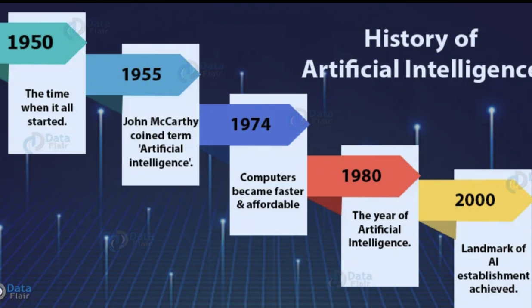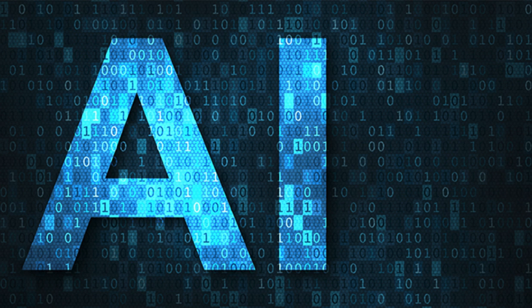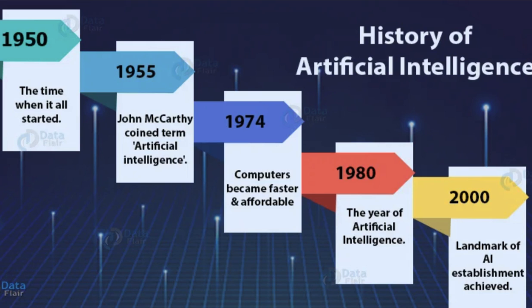Looking at the history of AI, in the mid-1950s John McCarthy, known as the father of artificial intelligence, defined AI as the science and engineering of making intelligent machines. The development of AI is mainly dependent on access to large amounts of data. That's why for many years we didn't see much improvement in AI, but now that we have access to huge amounts of data, technologies are allowing us to process and manipulate data better than humans.